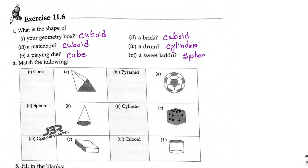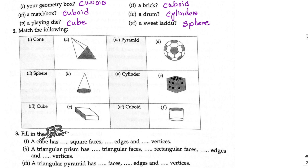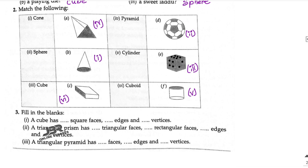Now match the following. Cone is number one. Sphere — a football is a sphere. Cube — a ludo dice is a cube. Pyramid is number four. Cylinder is number five. And cuboid is number six.